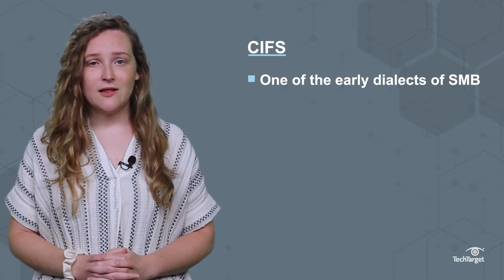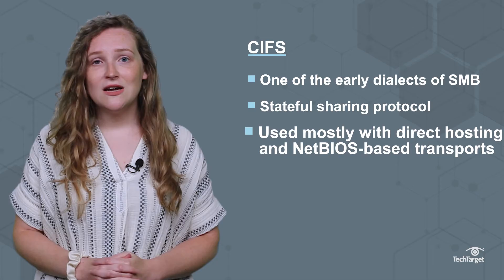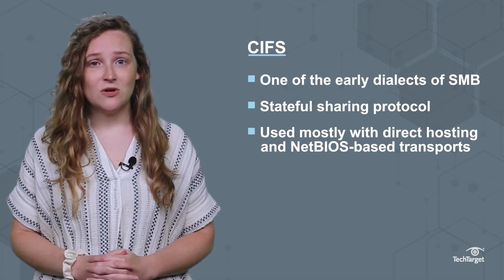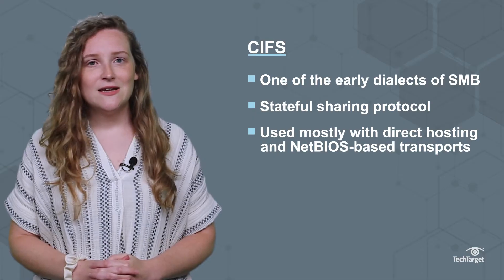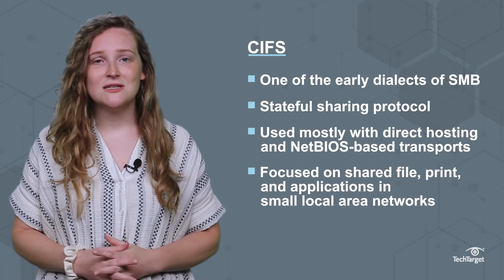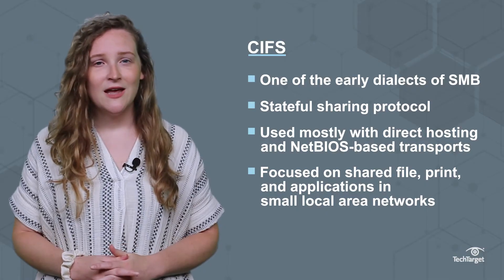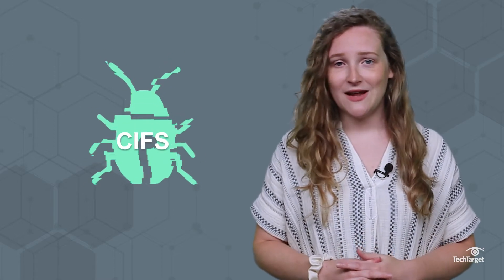CIFS, one of the early dialects of SMB, is a stateful sharing protocol used mostly with direct hosting and NetBIOS transports, such as NetBIOS over TCP/IP. CIFS and SMB also initially focused on shared file, print, and applications in small local area networks, and are generally less scalable than NFS. CIFS and SMB are often used interchangeably, which can be misleading. CIFS is considered a chatty, buggy protocol, so it's rarely used in modern storage systems today.